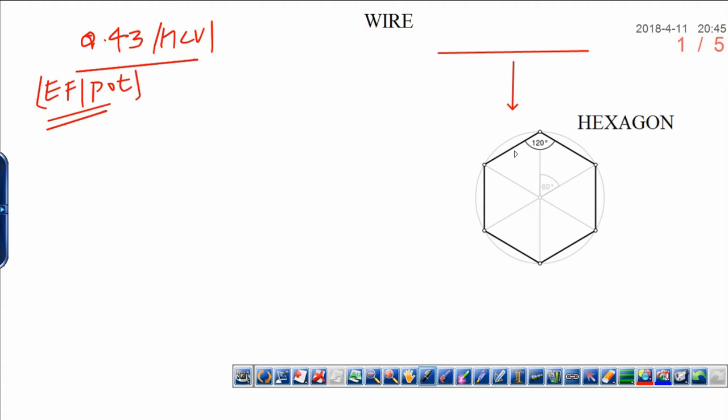That is why electric field due to each part of this hexagon at the center can be treated by this way. This is the one electric field and this is due to another and this is due to another and this is due to this and this will be due to this and this will be due to this.